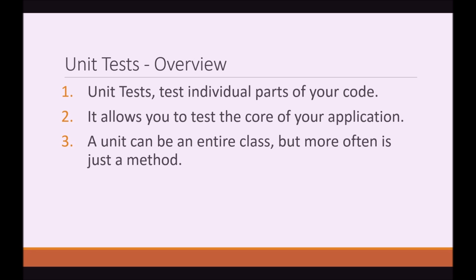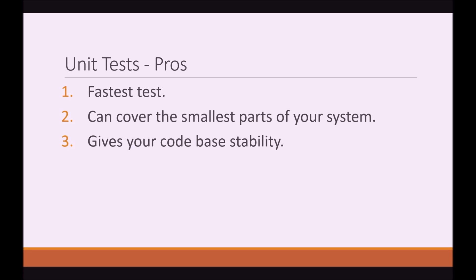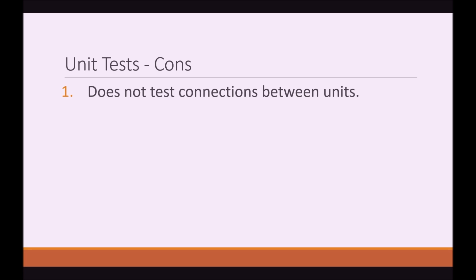So let's discuss unit tests. Unit tests test individual parts of your code — you can break it down to the core of your application. A unit can be an entire class, but more often it's just a method. The pros: it's the fastest test to run, it can cover the smallest parts of your system, and gives your code base stability. The con: it does not test connections between units.